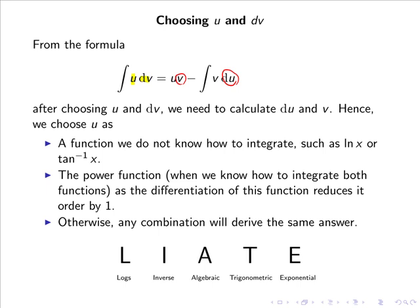This can be conveniently remembered using the LIATE method: Logarithmic, Inverse, Algebraic, Trigonometric, Exponential. If we have inverse and algebraic, choose u as the inverse since I comes before A. If we have algebraic and exponential, choose the algebraic term since A comes before E.